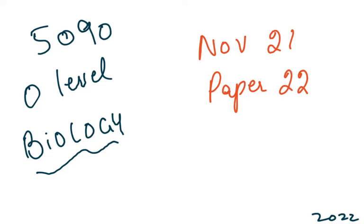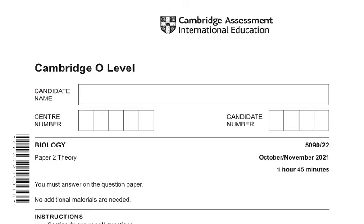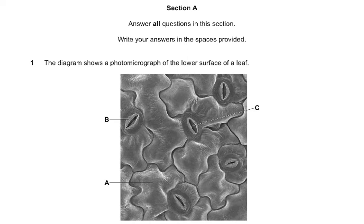Bismillahirrahmanirrahim. This is the O-Level November 2021 Paper 2-2, and I'm going to explain it and revise the topics discussed in it. This paper is one hour and 45 minutes. You have to do Section A, where you answer all the questions, Section B likewise, and in Section C you only have a choice.